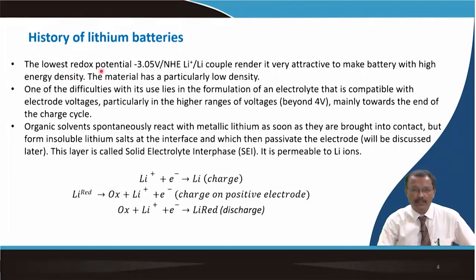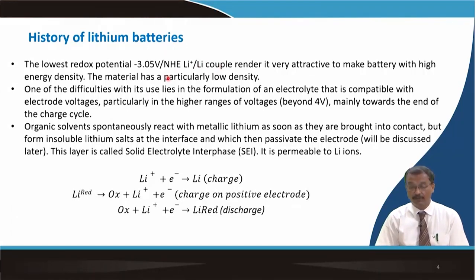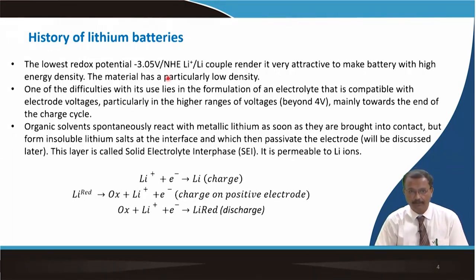The lowest redox potential of this couple — where the oxidized state is lithium-plus and lithium metal is in reduced form — gives a negative reduction potential of minus 3.05 volts with respect to the hydrogen electrode, as introduced in the first lecture on basic electrochemistry. This is very attractive for making a battery with high energy density.